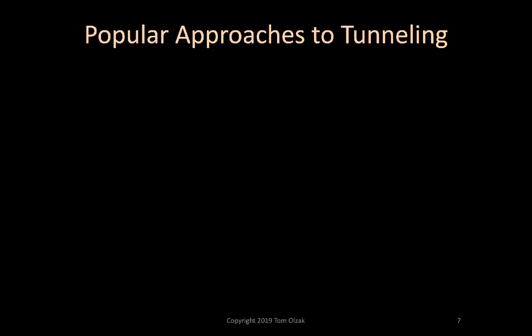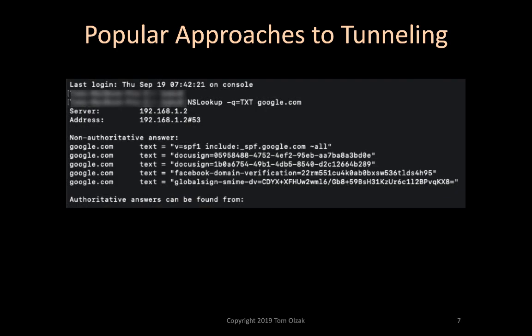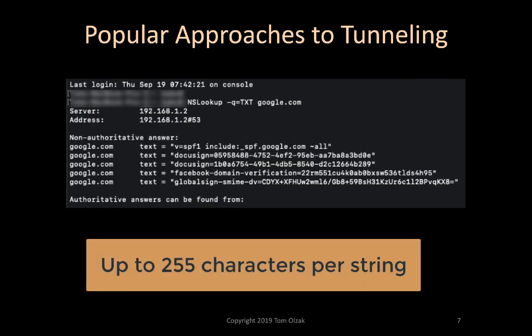MA usually use one of two methods to exchange information with victim computers: TXT text and A records. When using text records, a little more information can be transmitted in a single packet. The text record can include up to 255 characters in a single string. An MA can use multiple strings, but this would increase the size of the record, making it easily detectable by DNS firewalls, which we'll discuss later in this video.